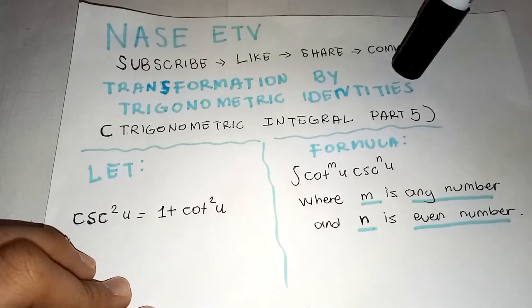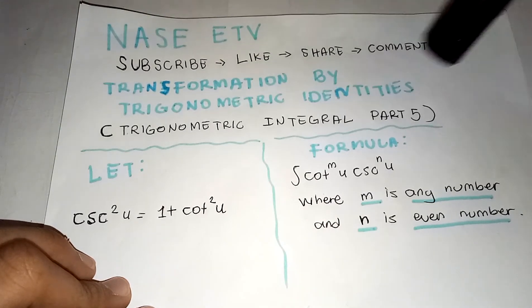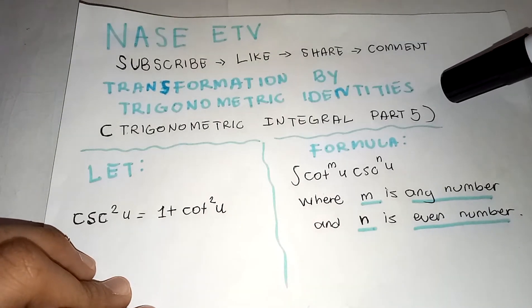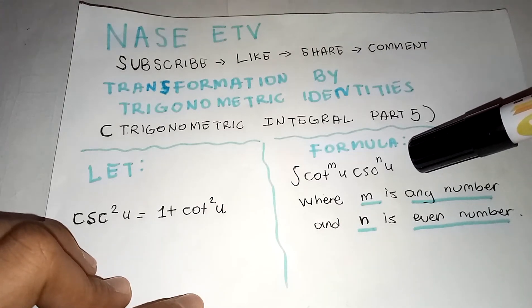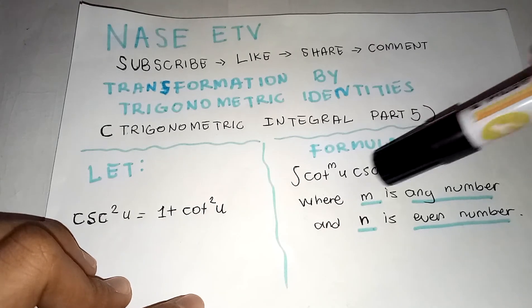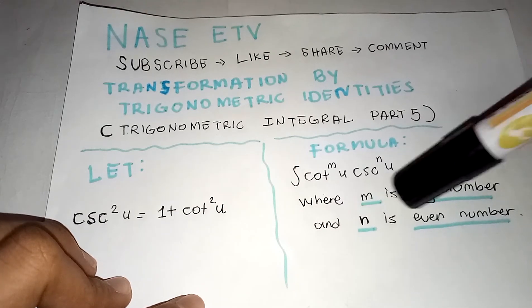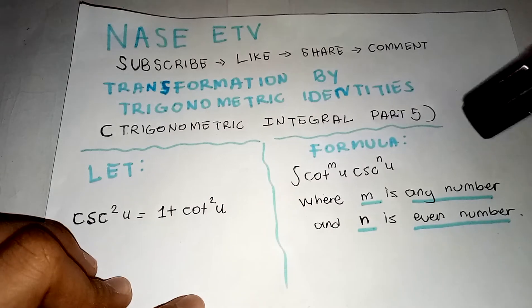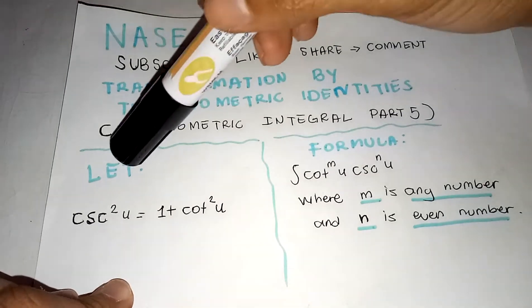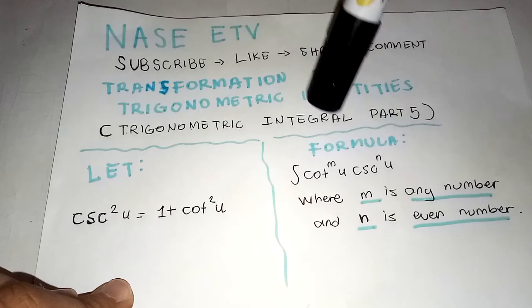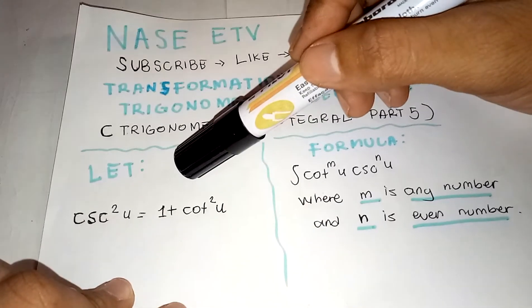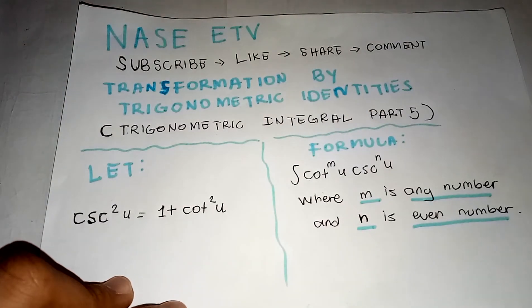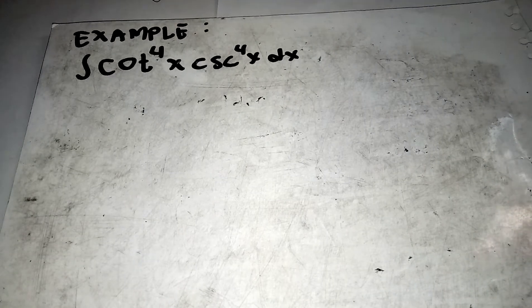For today's video: Transformation by Trigonometric Identities, Trigonometric Integral Part 5. In Part 5, here's our formula: the integral of cotangent raised to m times cosecant raised to n, where m is any number and n is an even number. Our rule is to transform cosecant squared u into 1 plus cotangent squared u.